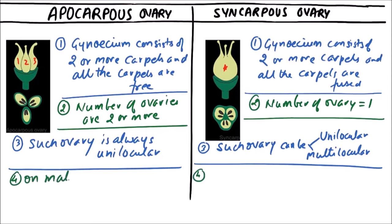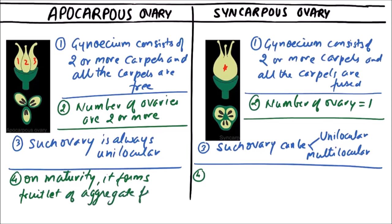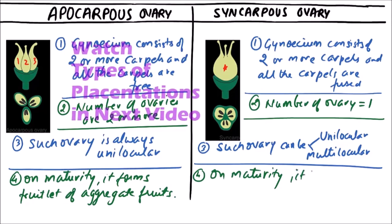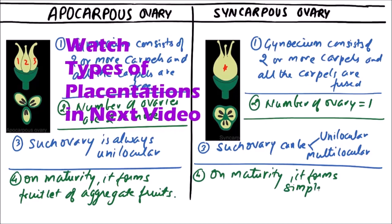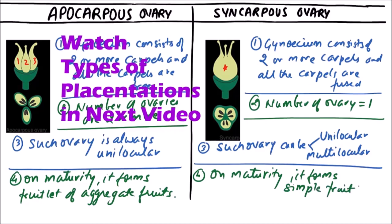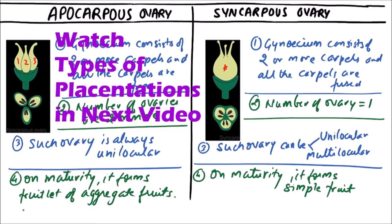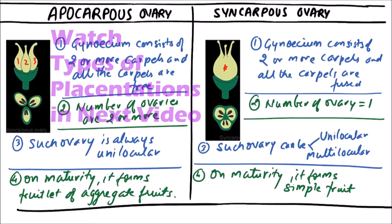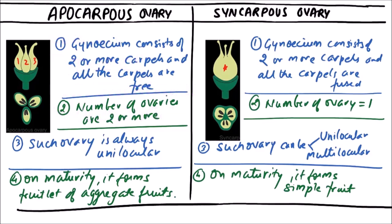In apocarpus ovary, on maturity it forms fruitlets of aggregate type of fruits, while in syncarpus ovary on maturity it forms a simple fruit. These are the various points of differences between apocarpus and syncarpus ovary. Thanks for watching this video.